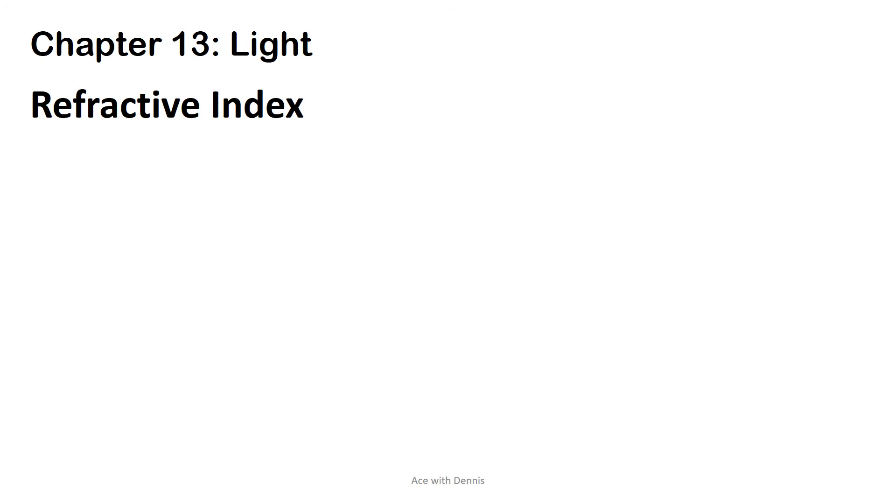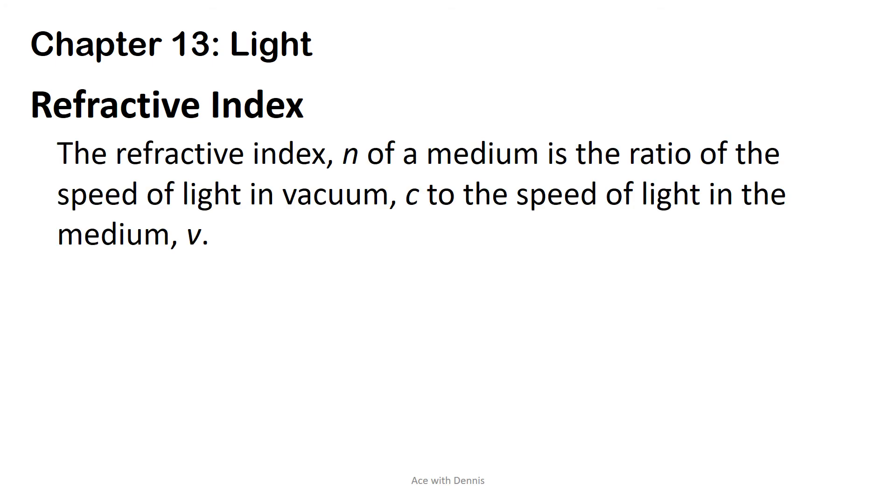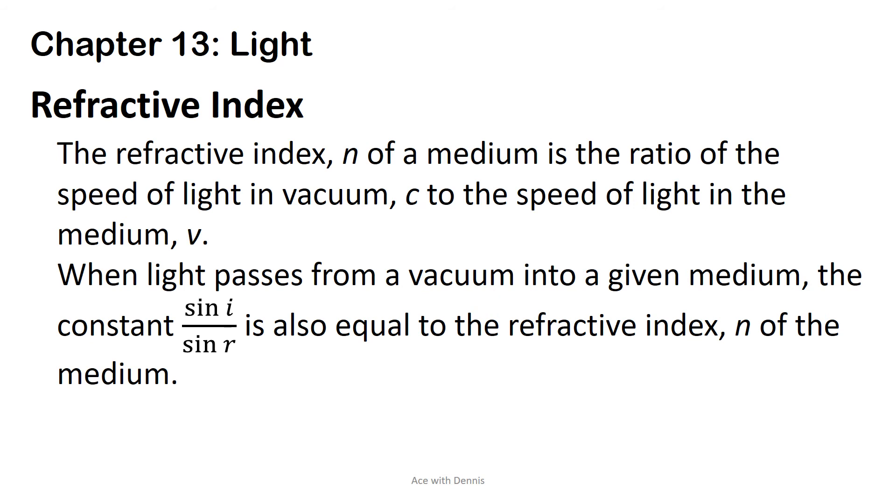Refractive index. The refractive index, N, of a medium is the ratio of the speed of light in vacuum, C, to the speed of light in the medium, V. When light passes from a vacuum into a given medium, the constant sine I over sine R is also equal to the refractive index, N, of the medium.